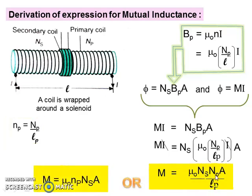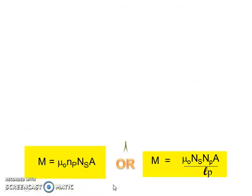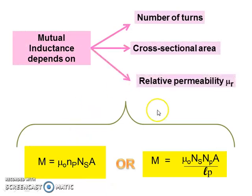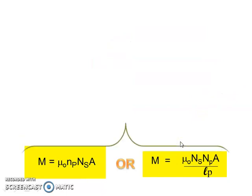We can also substitute Np/Lp as the turn density np in the first equation. As a conclusion, the mutual inductance depends on number of turns, cross-sectional area, and relative permeability μR. If the solenoid is empty, we use μ₀; but if we insert an iron core in the solenoid, the formula becomes μ₀μR.